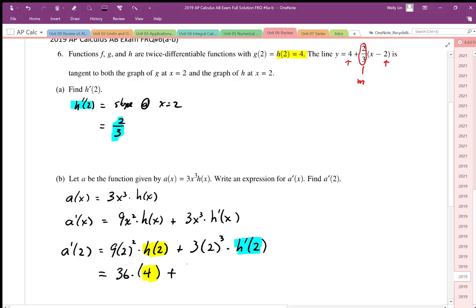Plus 3 times 2³ is 8, so that's going to be 3 times 8 which is 24. And then h prime of 2 we worked out to be 2 over 3. When we work this all out this is going to be equal to 160. So that's the value of a prime at 2.